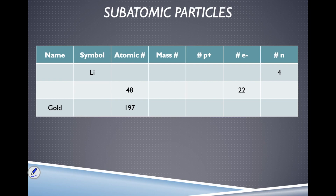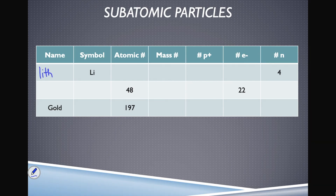First example: the symbol is Li — lithium, which we've already talked about this lesson. We find it on the periodic table. The atomic number is three — it's right underneath hydrogen.